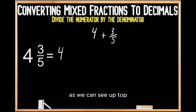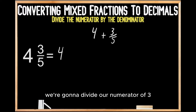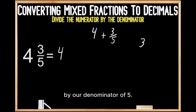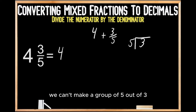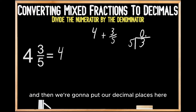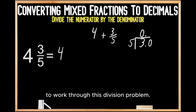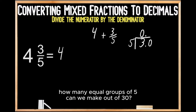To do this, as we can see up top highlighted in yellow, we're going to divide the numerator by the denominator. So in this case, we're going to divide our numerator of 3 by our denominator of 5. Obviously here we can't make a group of 5 out of 3, so we're going to have to go into our decimal places. We're going to write a 0 up top and then put our decimal places so that we have some numbers to bring down to work through this division problem. Now we're going to be thinking: how many equal groups of 5 can we make out of 30?